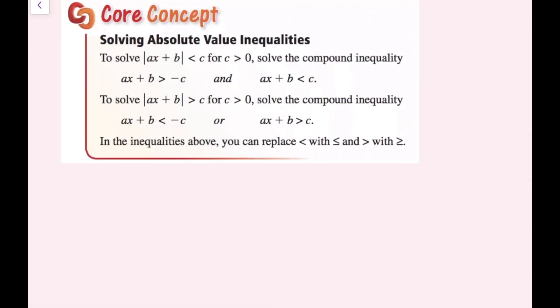The core concept: to solve the absolute value of ax plus b is less than c, for c greater than 0, solve the compound inequality where ax plus b is greater than negative c and ax plus b is less than c. I'm going to show you why that's the case.